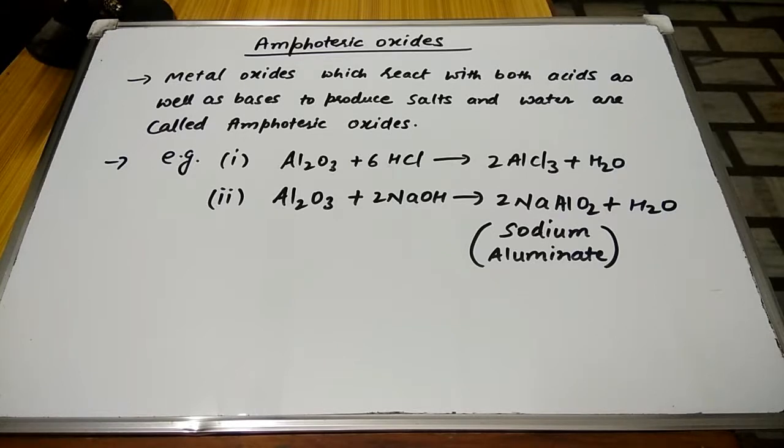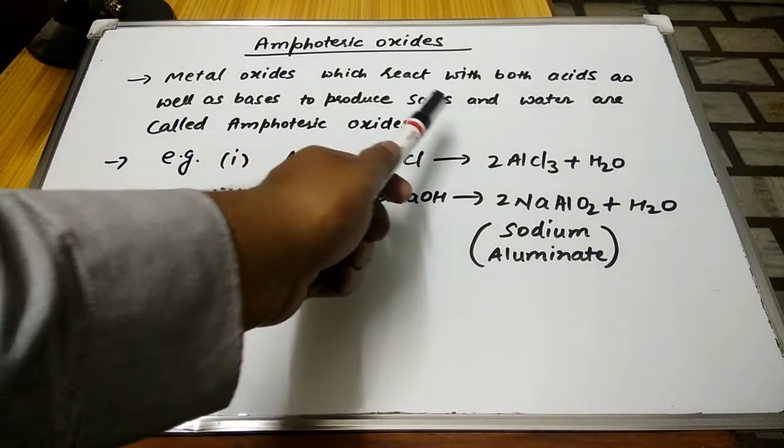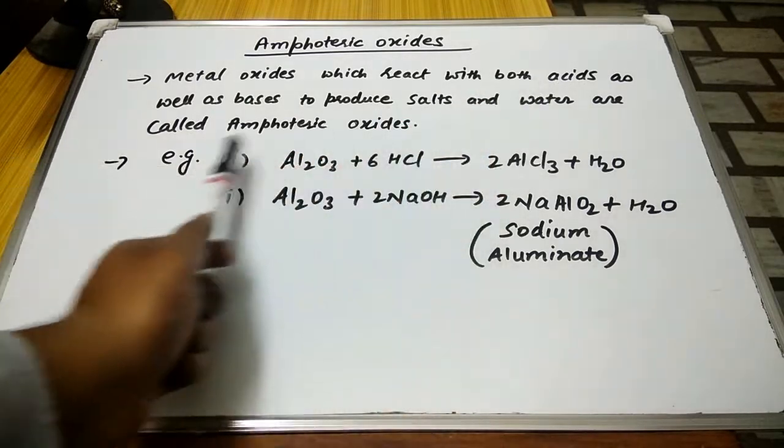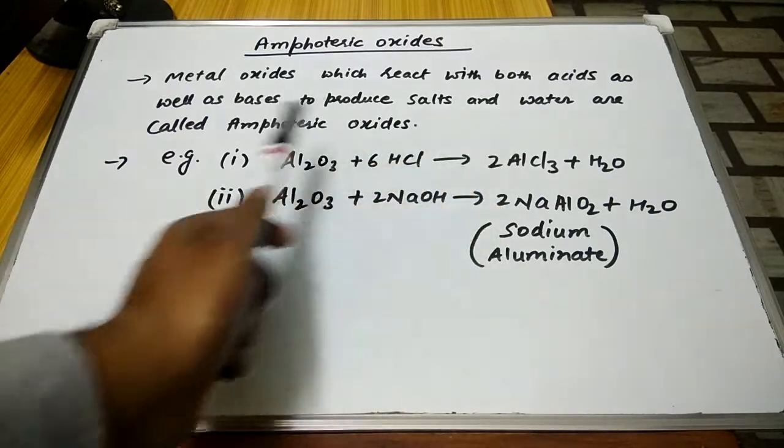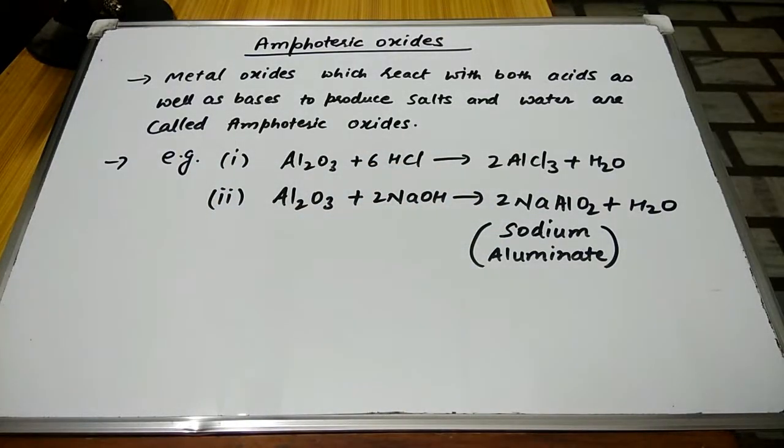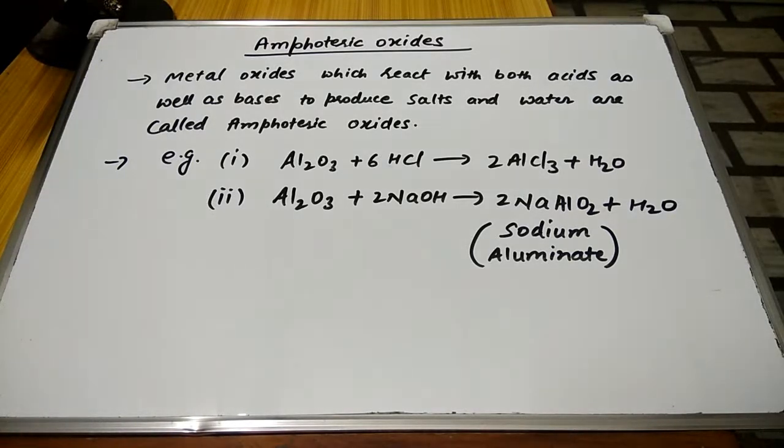Now let us discuss amphoteric oxides. Metal oxides which react with both acids as well as bases to produce salts and water are called amphoteric oxides.